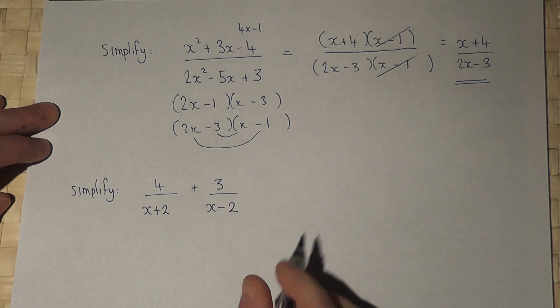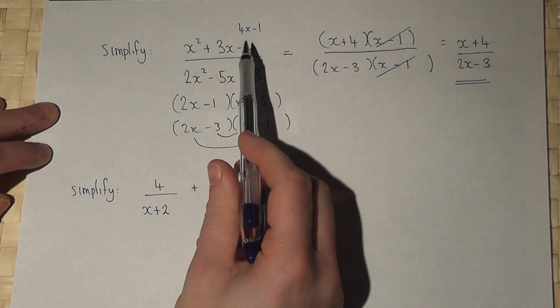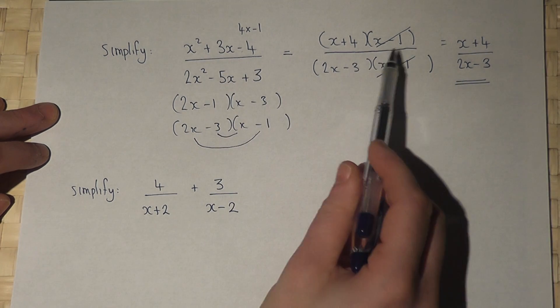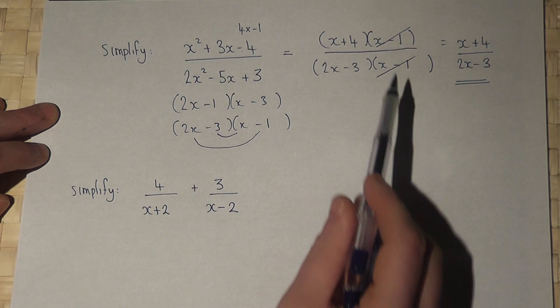So again, the method here is to try to factorize the top and the bottom, listing the options where necessary. Once it's factorized, cancel anything that's the same above and below.